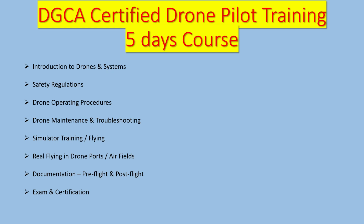There is also a written exam where you need to score 70–75%, which is the minimum pass mark. After course completion you get your certification, and you also apply for your license on the Digital Sky platform. After a few days you receive your license, which is valid for 10 years. It certifies you to fly drones in the small category — up to 25 kilos — covering applications like agriculture, surveying, aerial photography, and wedding photography.